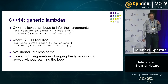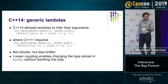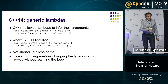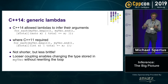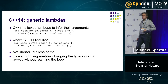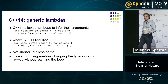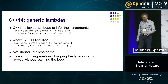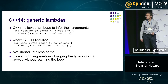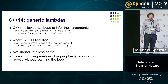C++14 adds generic lambdas, allowing lambdas to infer their arguments. I want to point out the goal of inference here is not to make your code shorter — it's not boilerplate elimination, but to make it less brittle. Looser coupling enables changing the type stored in my_vec without getting an inadvertent truncation in your loop, as you might have with C++11 code.